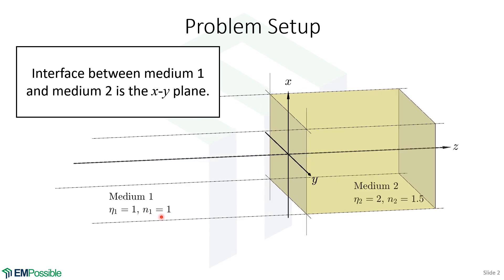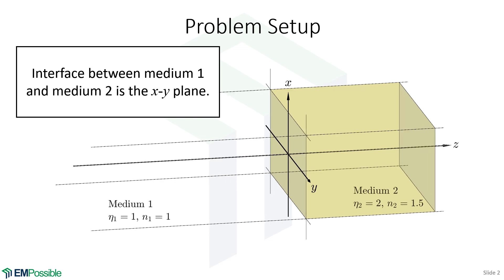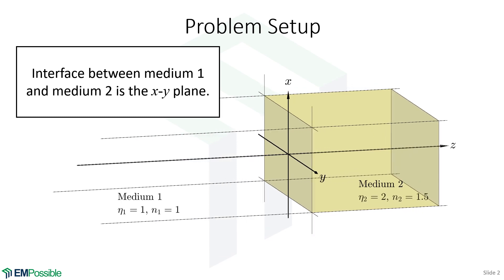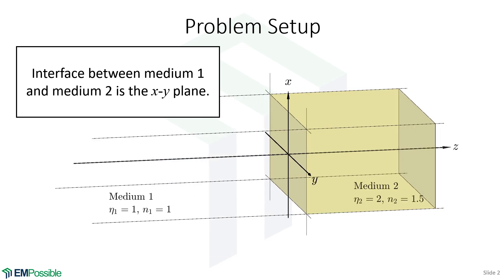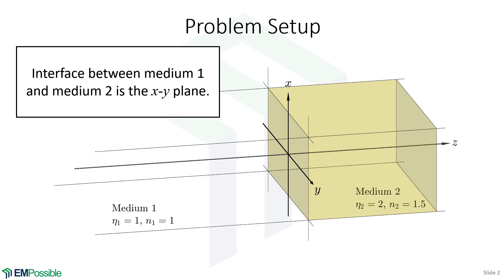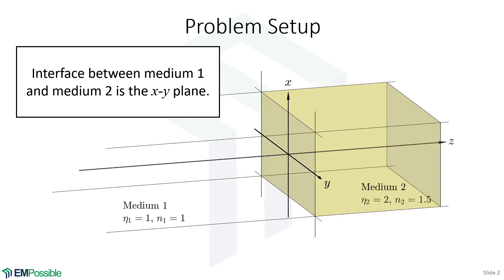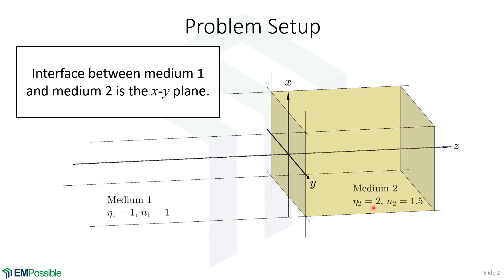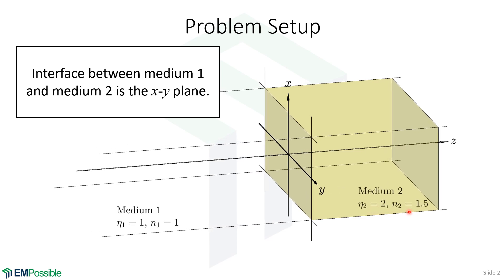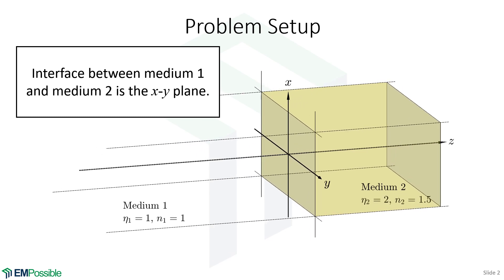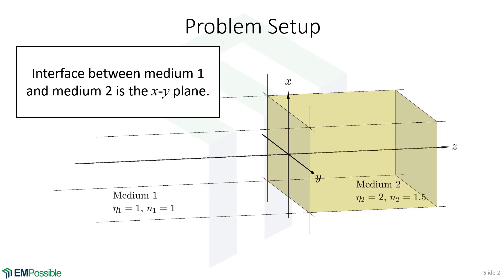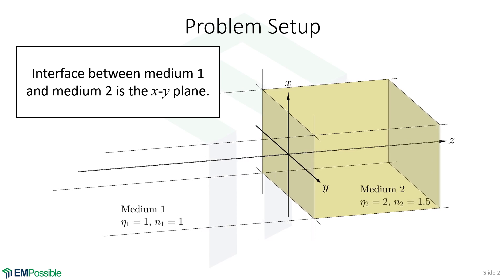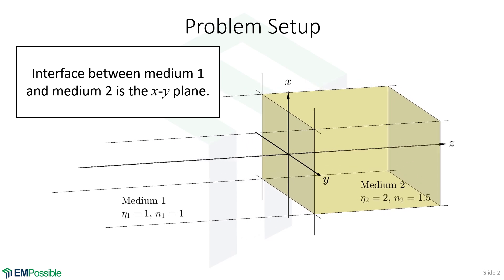The second parameter is refractive index. This is the factor by which a wave slows down inside of a medium. So with refractive index of one, that means we have air or vacuum on the left. On the right, we're making these parameters a little bit different because that's a second material. We're going to let the impedance be two, so the electric and magnetic fields will have a slightly different balance, and refractive index will be 1.5, so the wave will be slowed down a little bit in medium two compared to medium one. It turns out refractive index really won't play much of a role here.